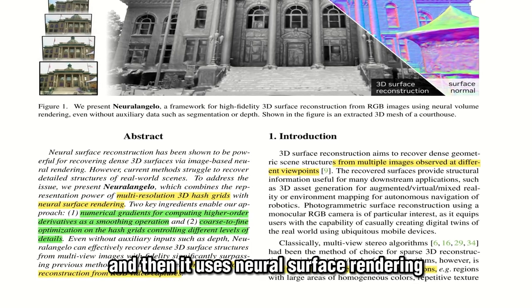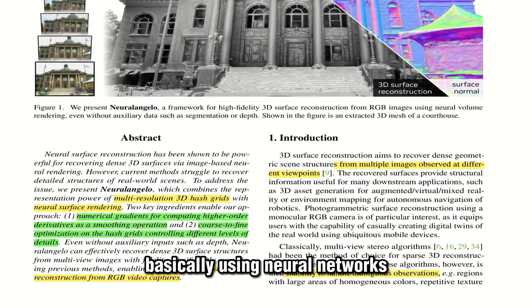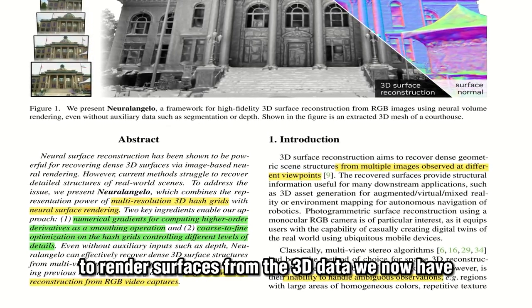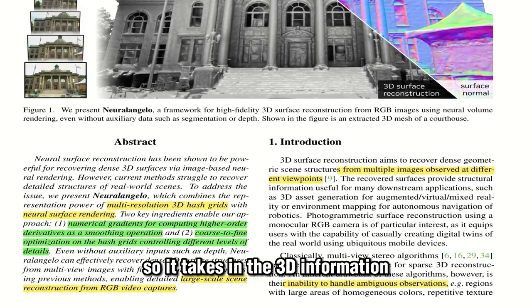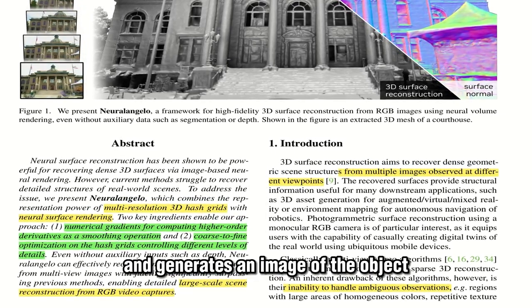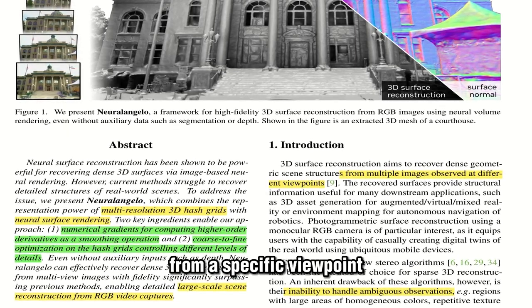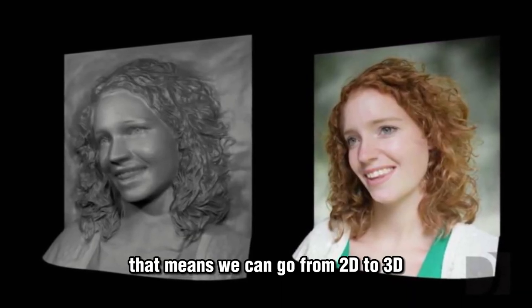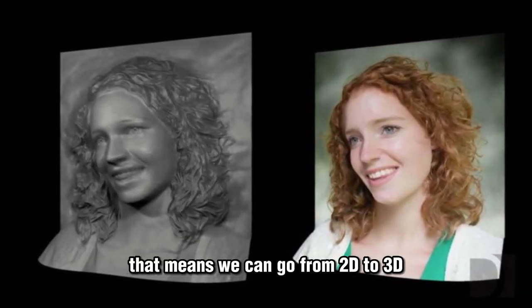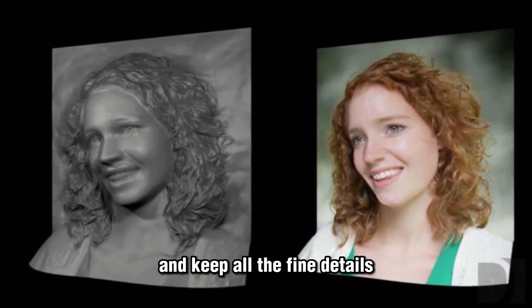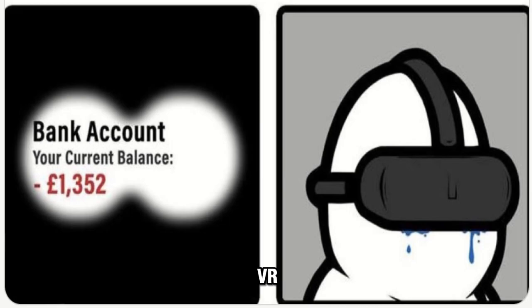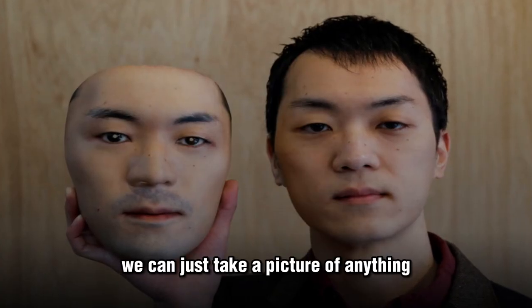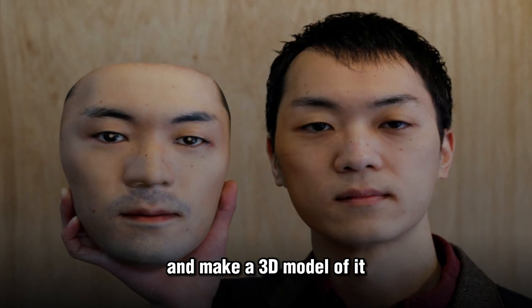Then it uses neural surface rendering — basically using neural networks to render surfaces from the 3D data. It takes in the 3D information and generates an image of the object from a specific viewpoint, meaning we can go from 2D to 3D and keep all the fine details. The possibilities here are huge for games, architecture, VR, medical imagery, or movies — we can just take a picture of anything and make a 3D model of it.